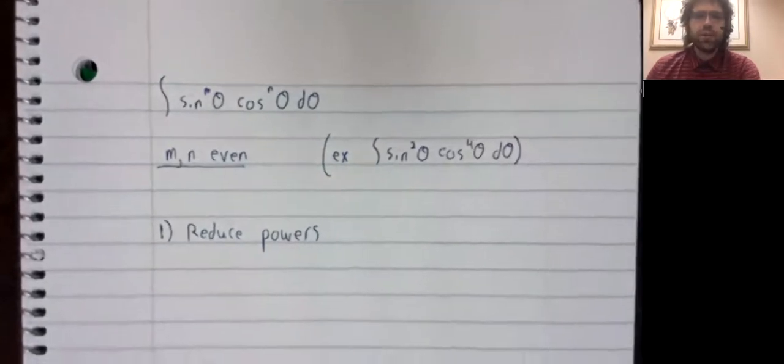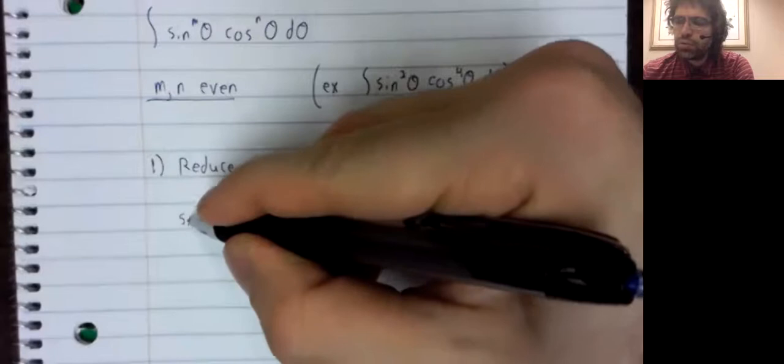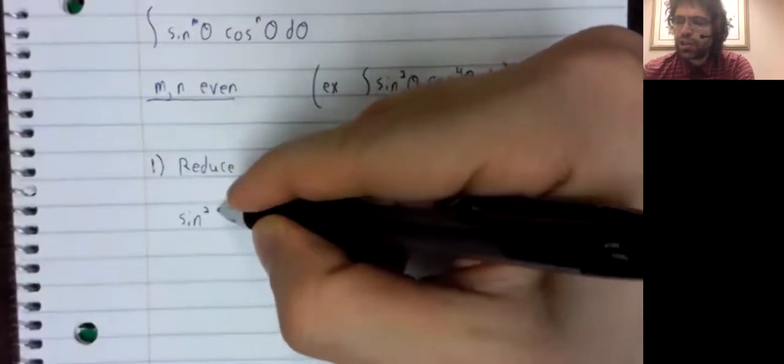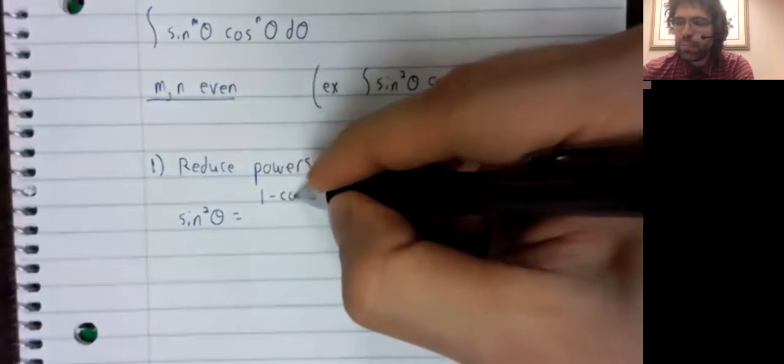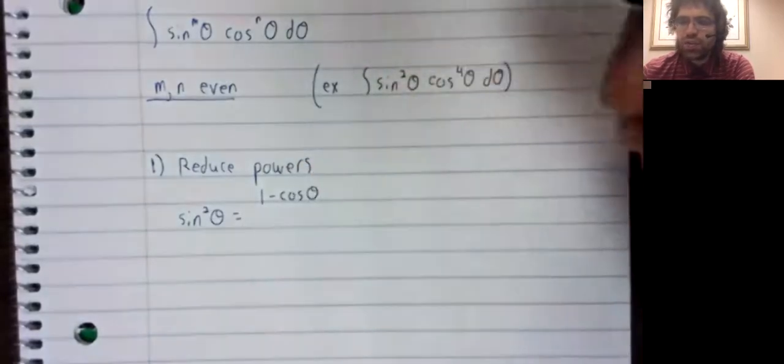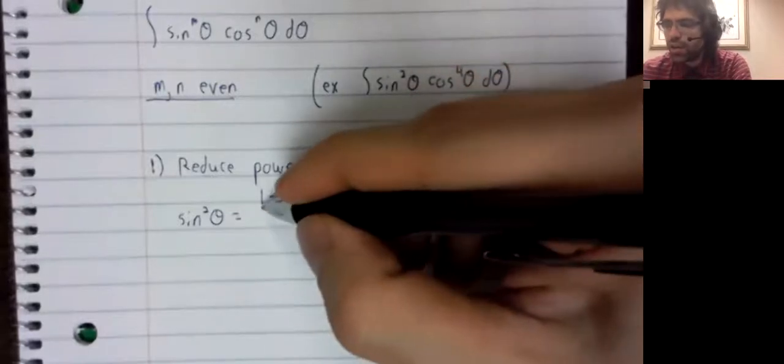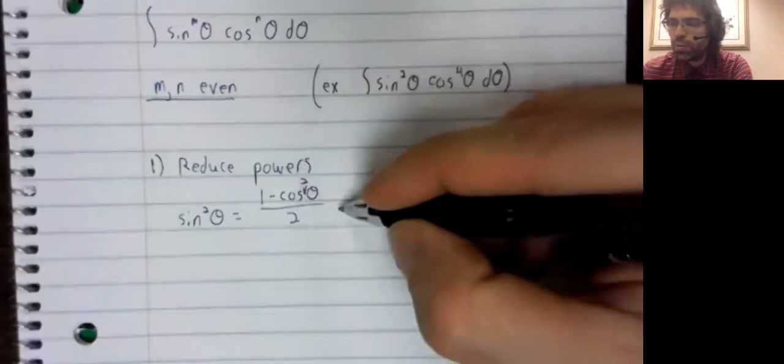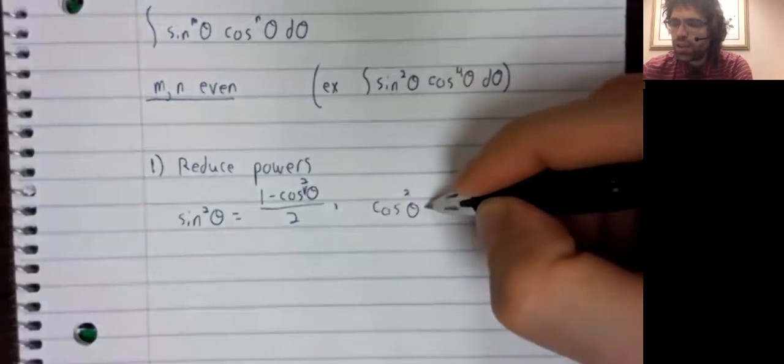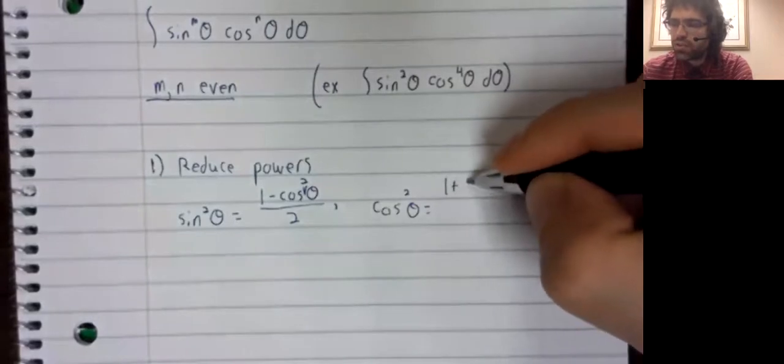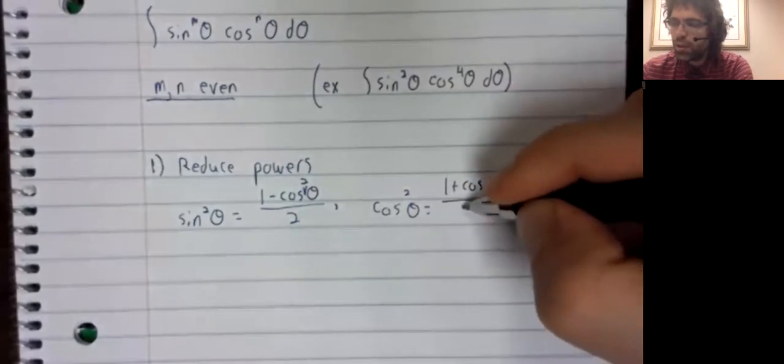When I say that we're going to reduce the powers, we're going to use the following two trigonometric identities, which you may very well not have memorized. The sine squared of theta is one minus the cosine of two theta over two. And the cosine squared of theta is one plus the cosine of two theta over two.